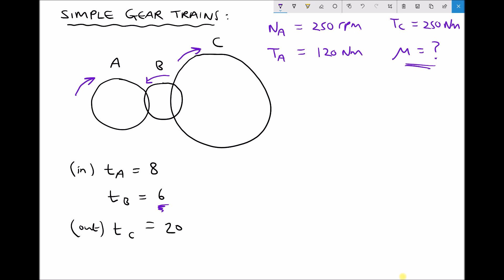So the first thing we can do here is calculate our input power because we have all of the information to do this. So P_in equals our formula is 2πNT over 60, but because we're doing the input we need to do N_A T_A over 60.